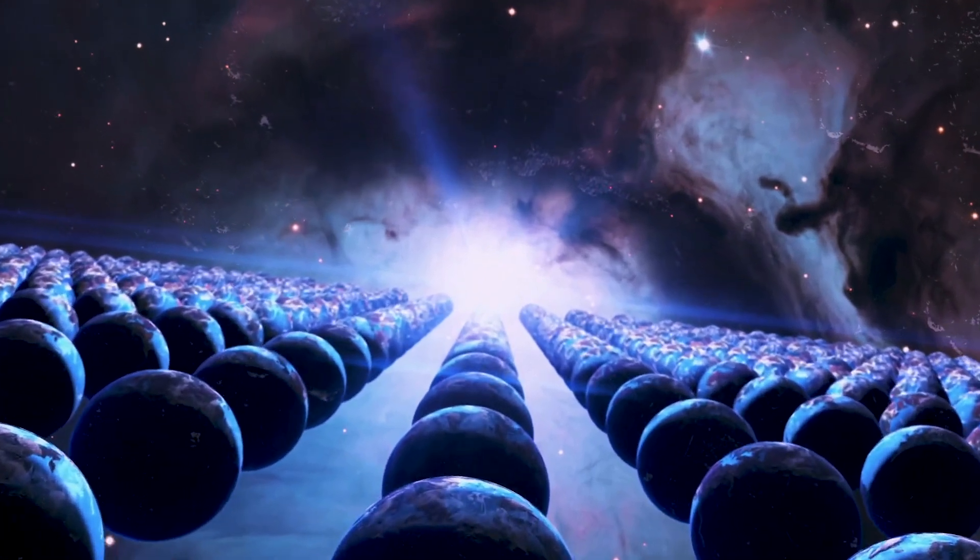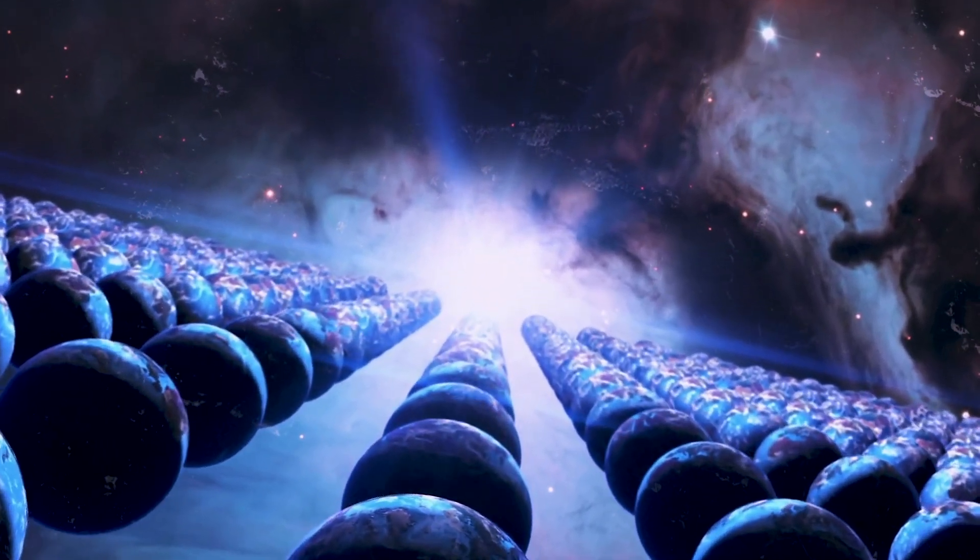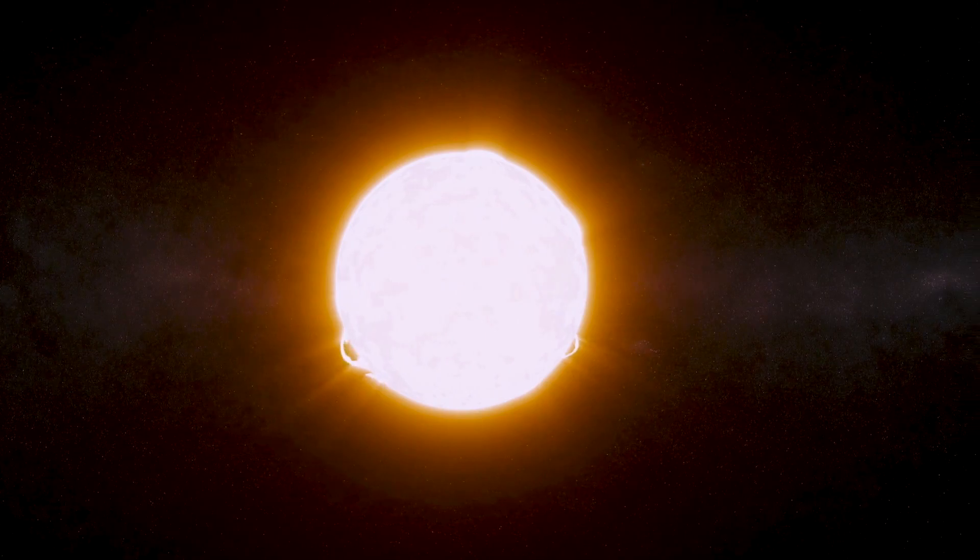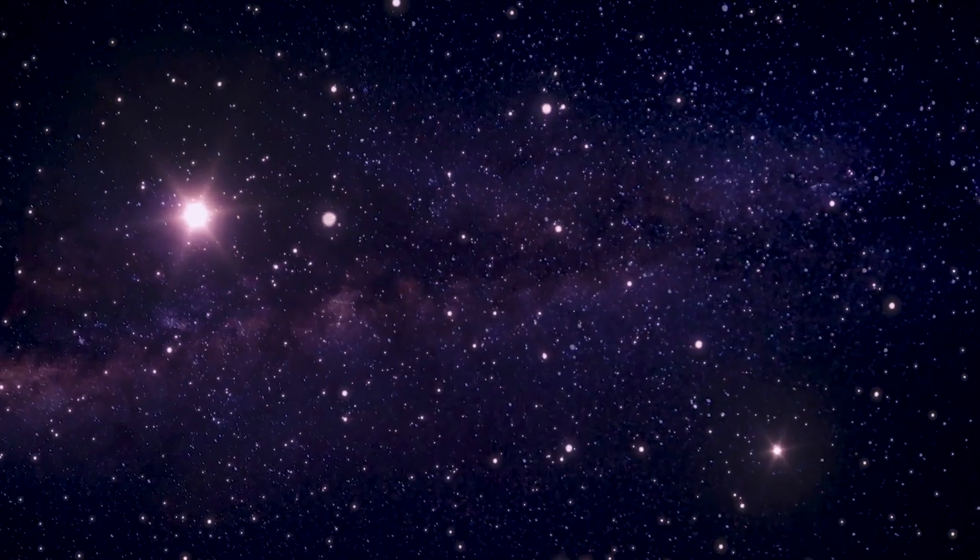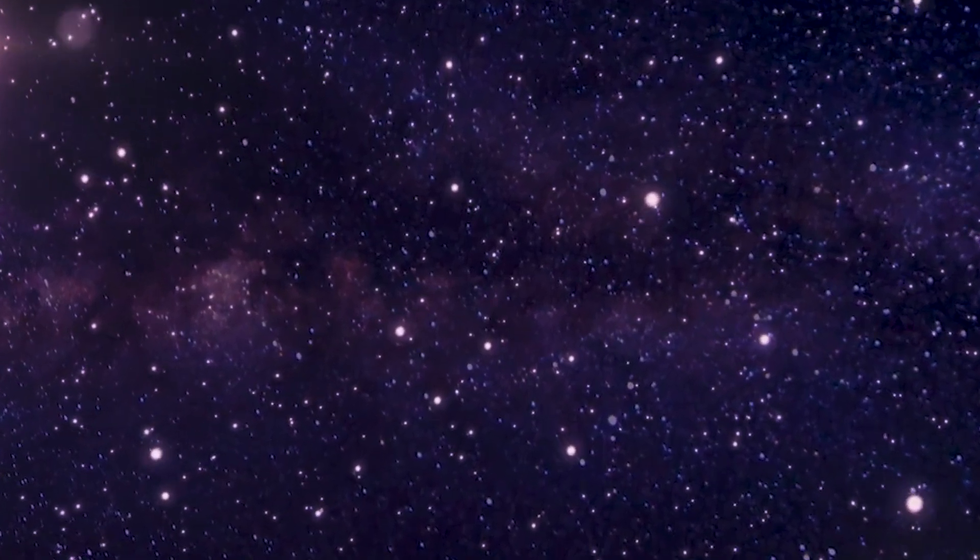It is entirely plausible that there could be other Earth-like planets given that our Sun is simply a regular star and that the Earth is just a regular planet. There are billions of other stars in the galaxy. So our solar system isn't all that unique.